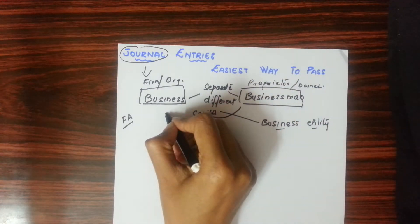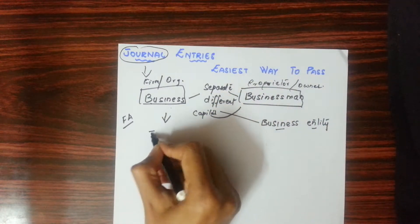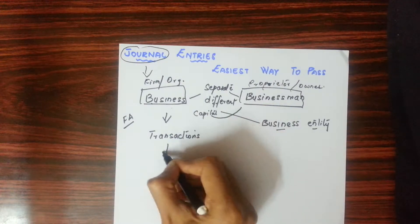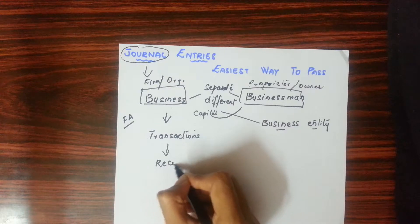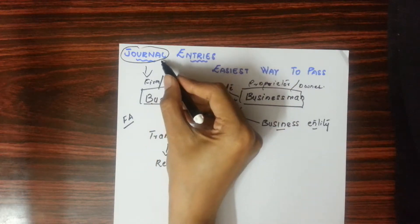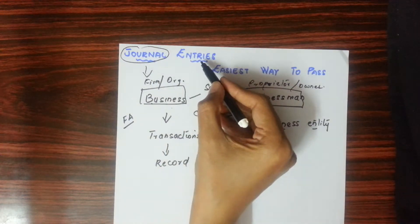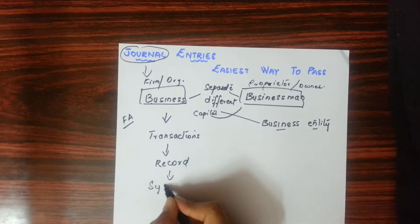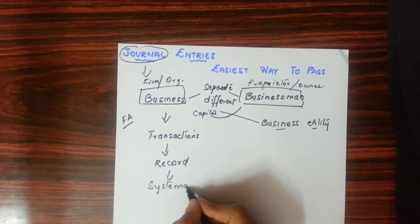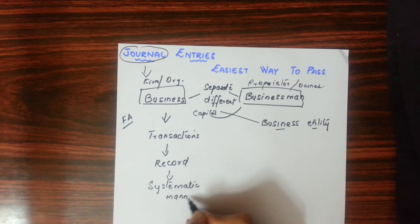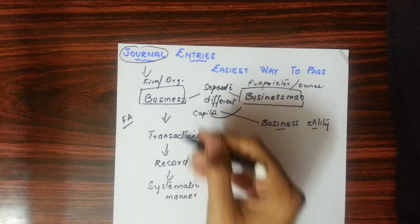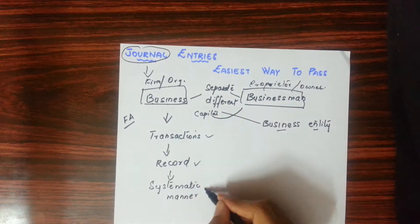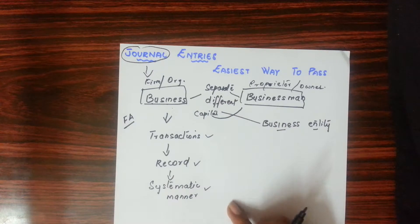So in business, we record whatever transactions happen. The first book of record is journal entries. We record them in a systematic manner. Whatever transactions happen related to business, we record them. Remember this well.